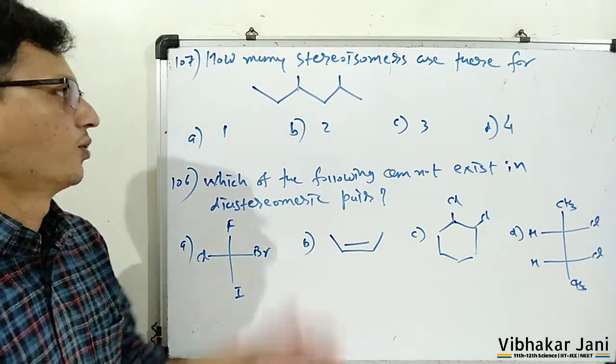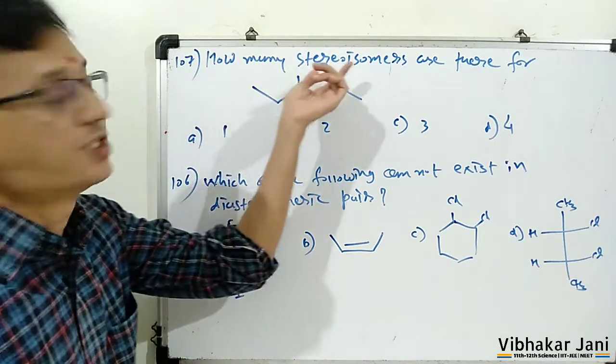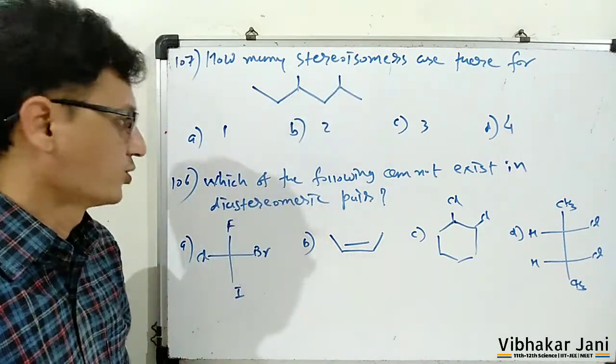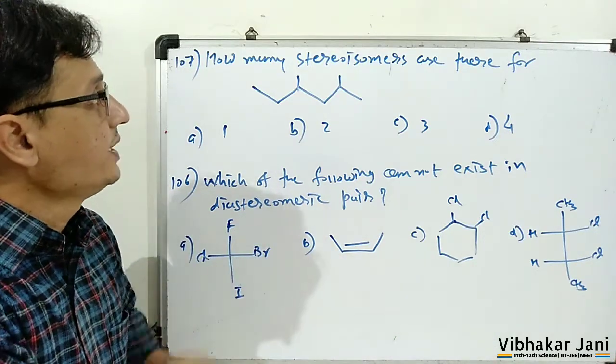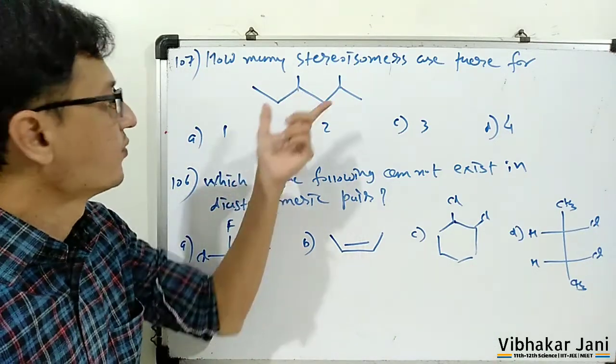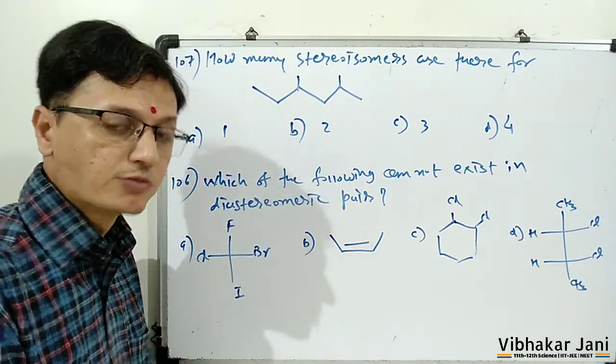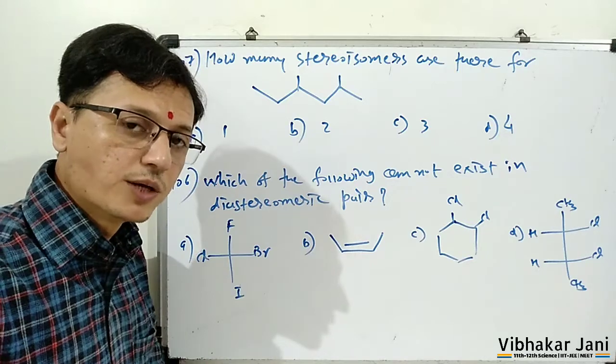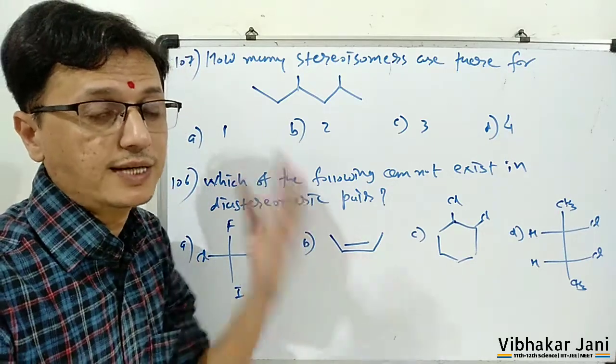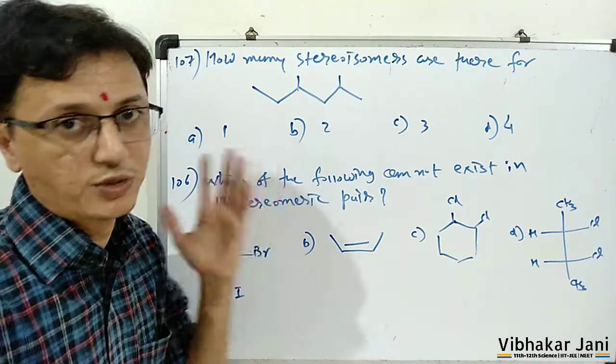One is from how many stereoisomers and here also diastereomer. So let us solve how many stereoisomers are there for this molecule. Now stereoisomer means optical isomer, and to find the stereoisomer, we have to find the total number of stereocenters present in our molecule.